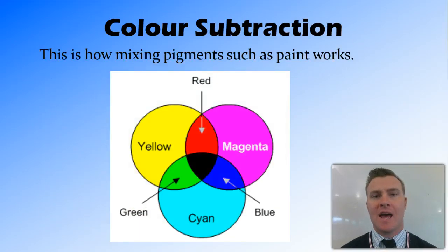Colour subtraction is how mixing colours of paint works. So the cyan filter that blocks red light, if we mixed it with a magenta filter that blocks green light and put them both over each other, the cyan would block out the red, the magenta would block out the green and we'd be left with blue. So this is how by taking away or subtracting different wavelengths we are left with a particular colour.